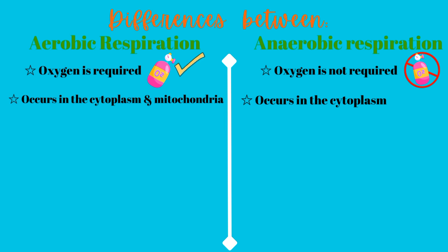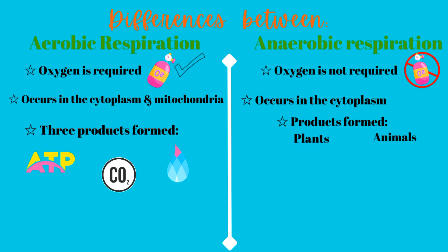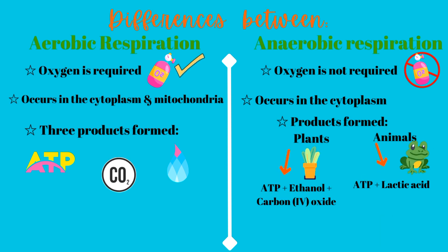Regarding products: aerobic respiration leads to the formation of three products — energy in the form of ATP, carbon dioxide, and water. Anaerobic respiration leads to different products in plants and animals. In animals, you get lactic acid and ATP. In plants, you get carbon dioxide, ethanol, and ATP.